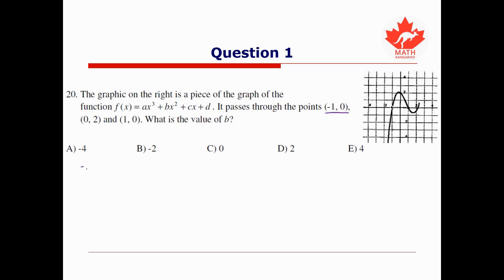So first we'll plug in (-1, 0). The zero goes on the left hand side, and we plug in the -1 where each of the x's are. So we get a(-1)³ + b(-1)² + c(-1) + d. This works out to -a + b - c + d.